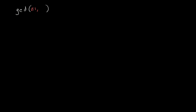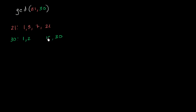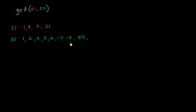So once again, there are two ways of doing this. There's the way I did last time, where I literally list all of the factors. For 21: its factors are 1 and 21, and 3 and 7. And 30 can be written as 1 and 30, 2 and 15, 3 and 10, and 5 and 6. So here are all of the factors of 30.